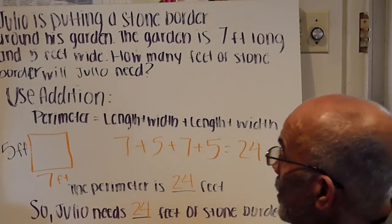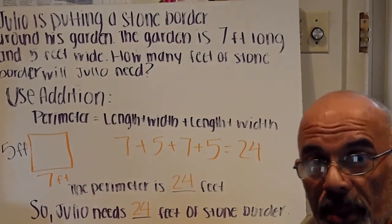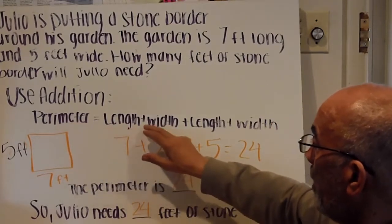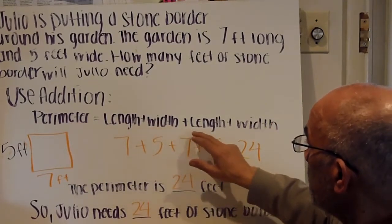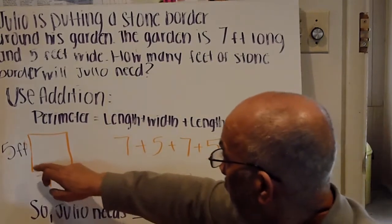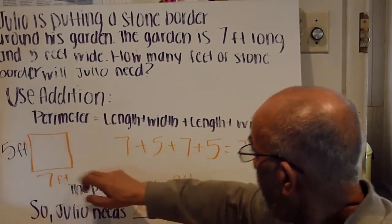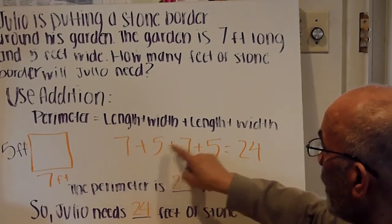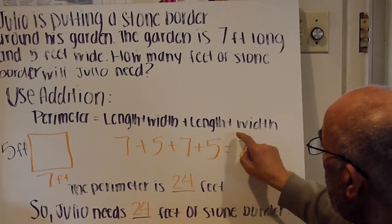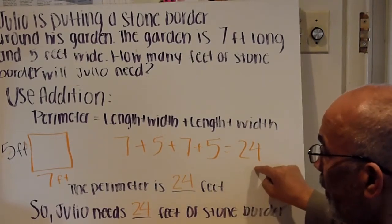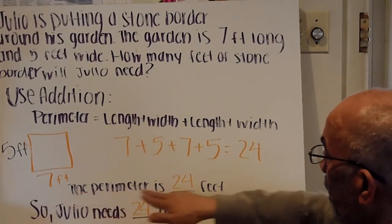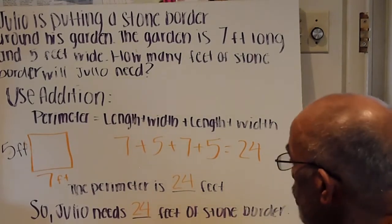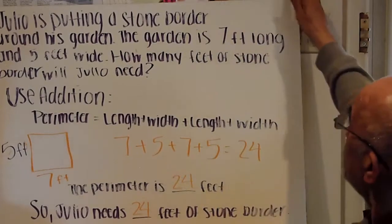First we're going to use the addition formula for finding the perimeter. Perimeter equals length plus width plus length plus width. Length, width, length, width. In this case, length is seven plus five, the width, plus seven plus five equals 24. The perimeter is 24 feet. So, Julio needs 24 feet of stone to build his garden.